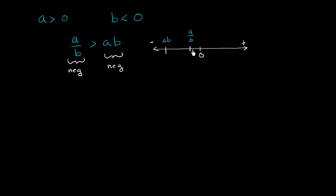Another way of thinking about it: a over b is going to have a smaller absolute value. Its distance from 0 — which is another way of thinking about absolute value — its distance to the left of 0 is less than a times b's distance to the left of 0.